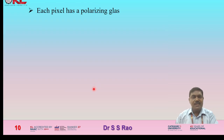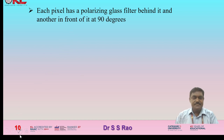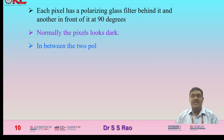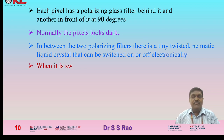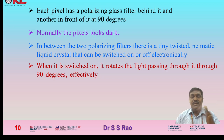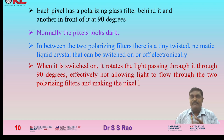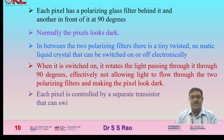Each pixel has a polarizing glass filter behind it and another in front at 90 degrees. Normally the pixels look dark. Between the two polarizing filters is a tiny twisted nematic liquid crystal that can be switched on and off electronically. When switched on, it rotates the passing light by 90 degrees, effectively blocking light from flowing through the two polarizing filters and making the pixel look dark. Each pixel is controlled by a separate transistor that can switch it on or off many times per second.